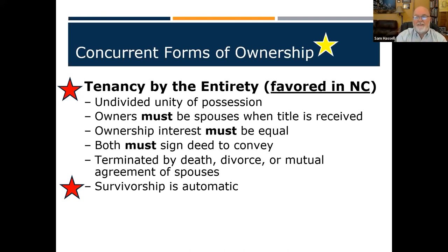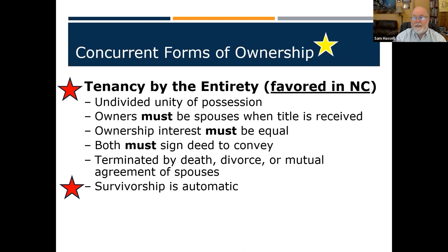Tenancy by the entirety can be terminated by death, divorce, or mutual agreement of the spouses. Survivorship is automatic — it doesn't need to be stated in anyone's will. Because both parties technically own 100%, when one dies, the other gets it all. That's what tenancy by the entirety is.